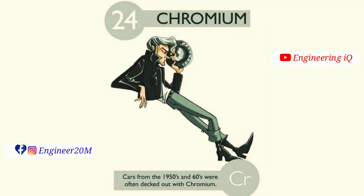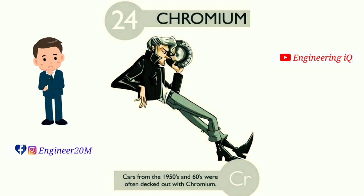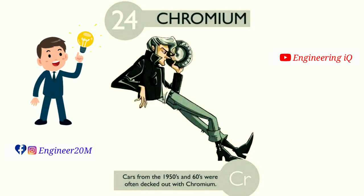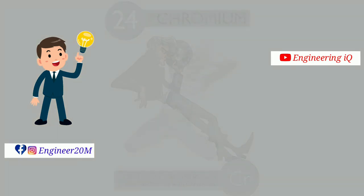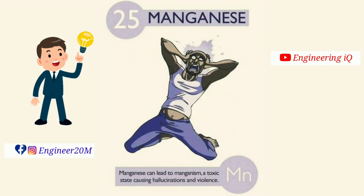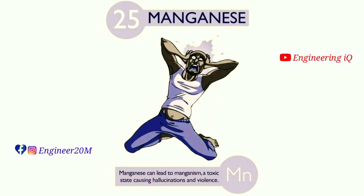Chromium: atomic number of chromium is 24. Cars from the 1950s and 60s were often decked out with chromium. It is denoted by Cr. Manganese: atomic number of manganese is 25. Manganese can lead to a toxic state.